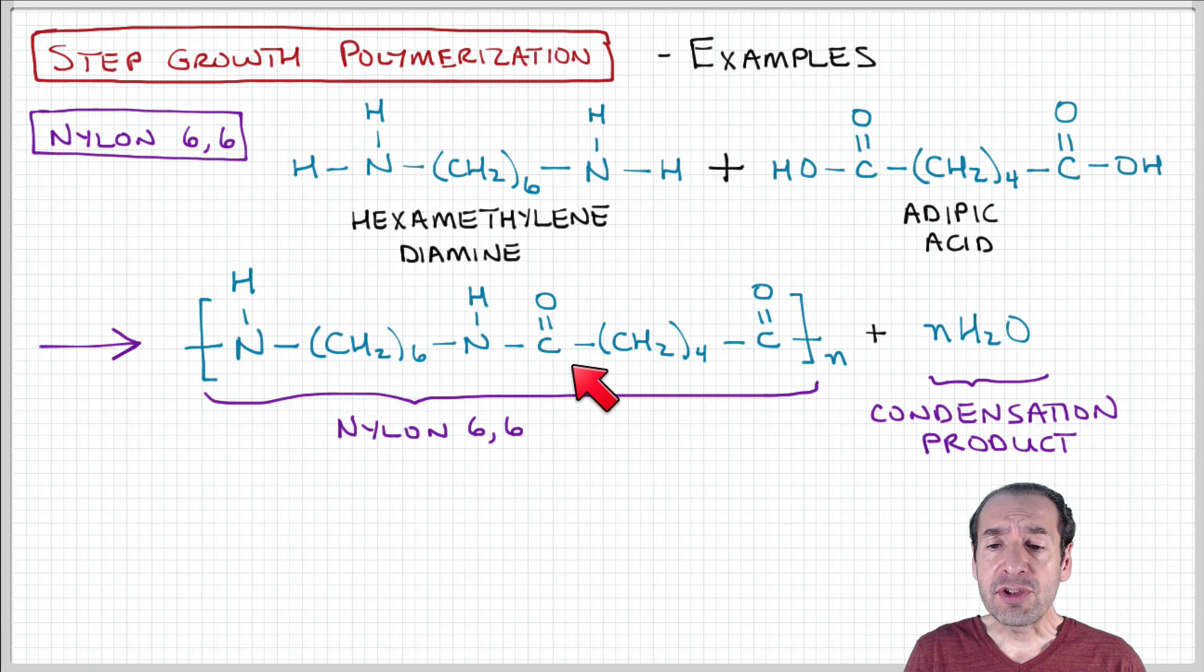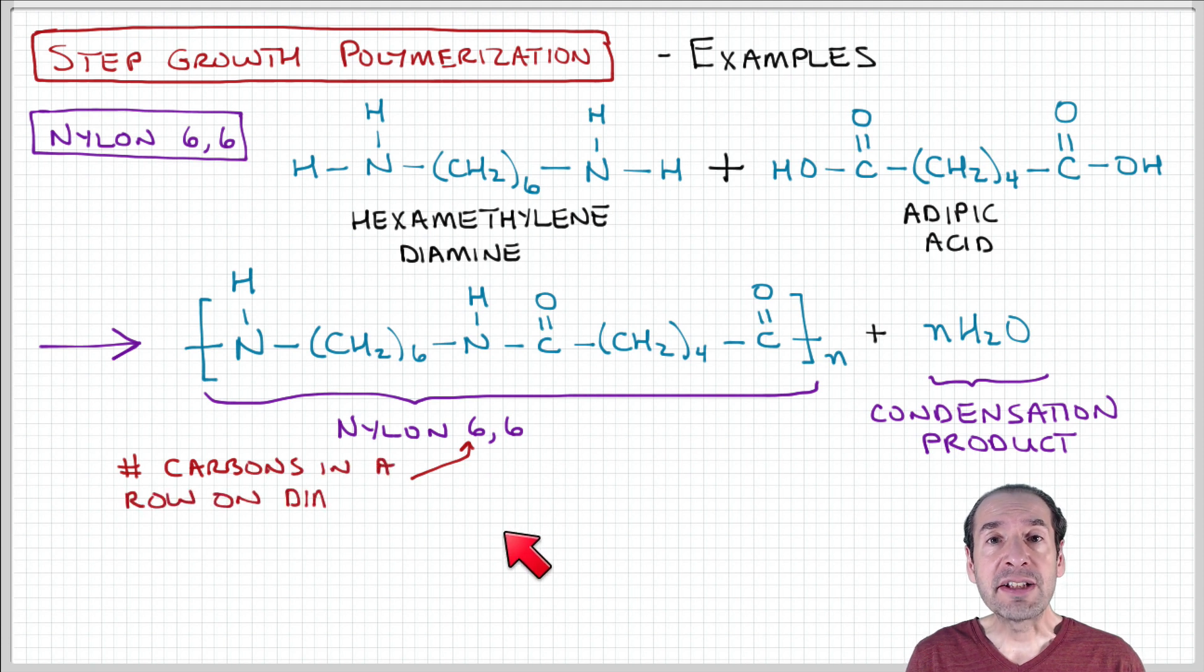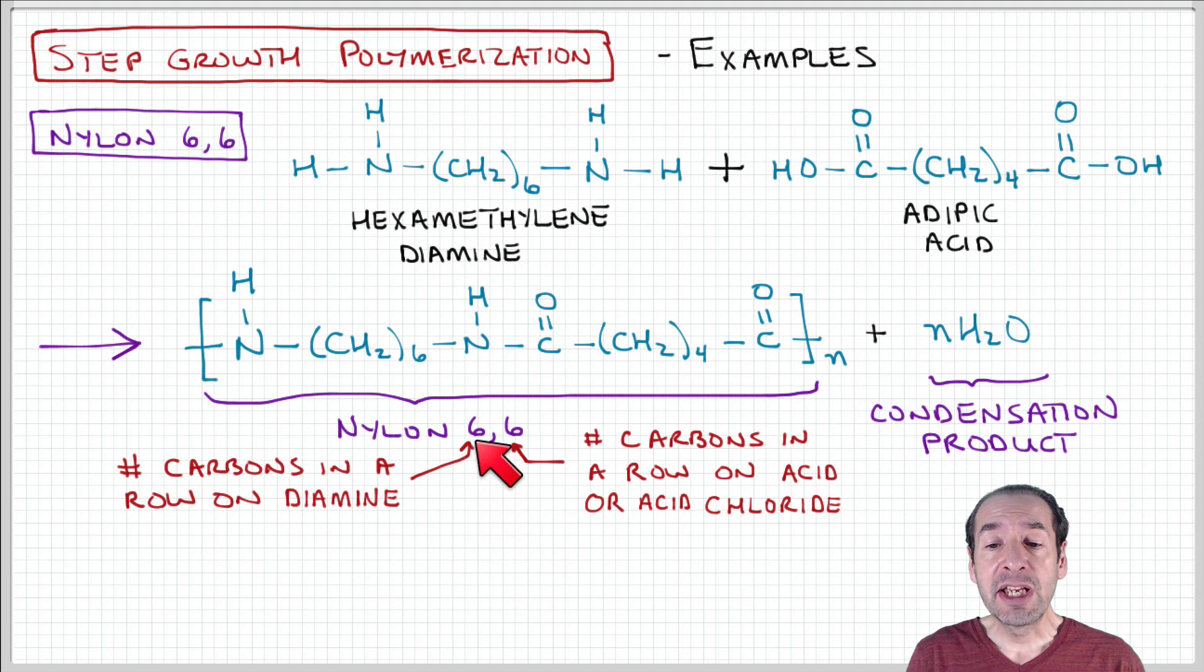This repeat unit structure is referred to as nylon 6-6, and the reason for that is there's a naming convention for nylons. There's different classes of nylons that are numbered based on the carbon units present in the repeat unit and the monomer units. The first digit represents the number of carbons on the amine monomer. So here there are six carbons on this group. And then the second number is the number of carbons on the acid or the acid chloride, the other monomer unit.